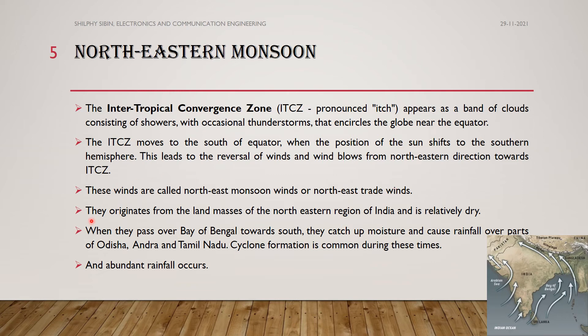These winds originate from the land masses of the northeastern region of India and are relatively dry. During this period, there will be rainfall in the northeastern region of India along parts of Odisha, Andhra, and Tamil Nadu. Cyclone formation is also common during these times, and abundant rainfall occurs.